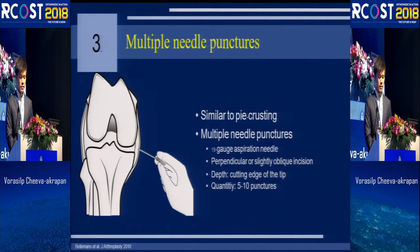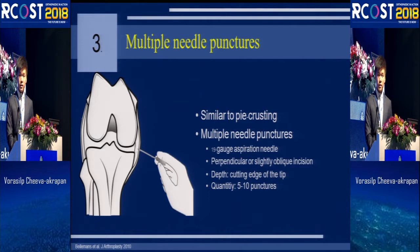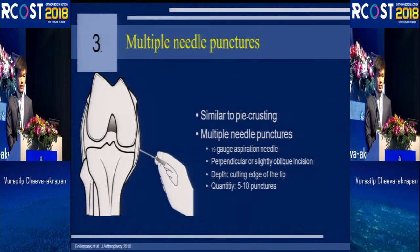The third technique is multiple needle punctures, which is an adaptation of the pie-crusting technique. It is similar to pie-crusting except that we use an aspiration needle instead of a blade. We perform a perpendicular or slightly oblique incision and control the depth using the cutting edge of the tip. We perform it five to ten times, then re-evaluate.